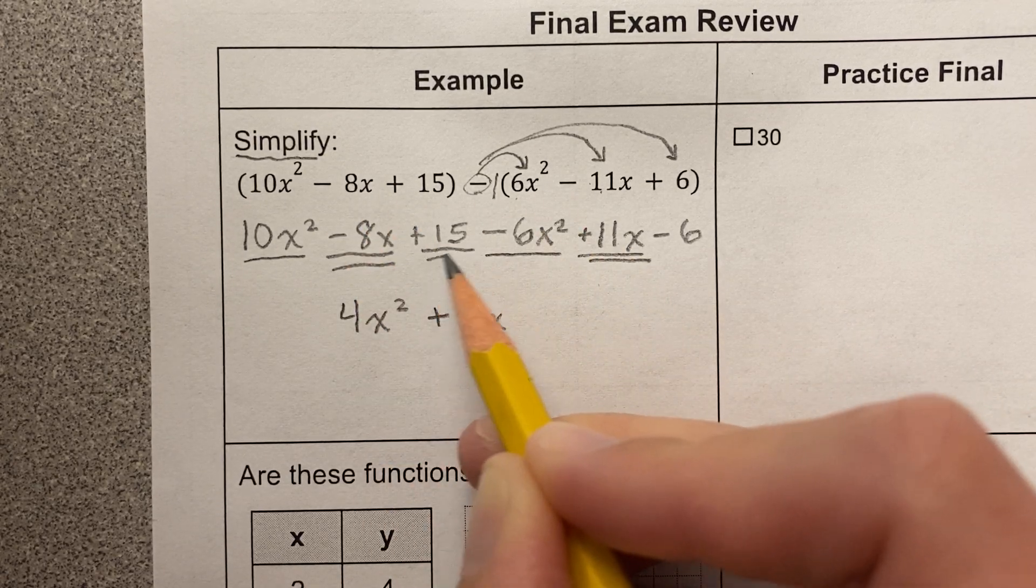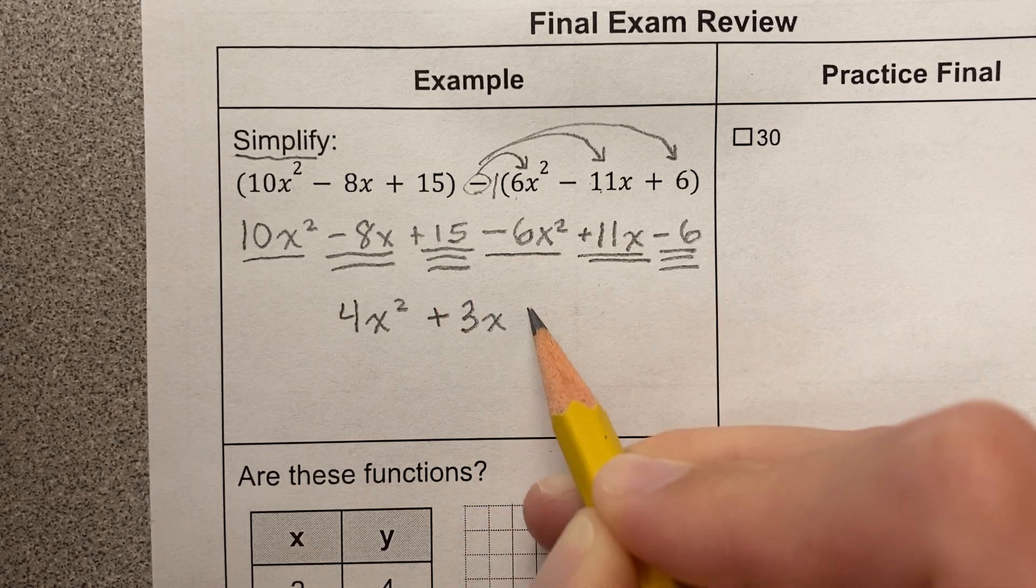And then here I have 15 take away 6, and that's 9.